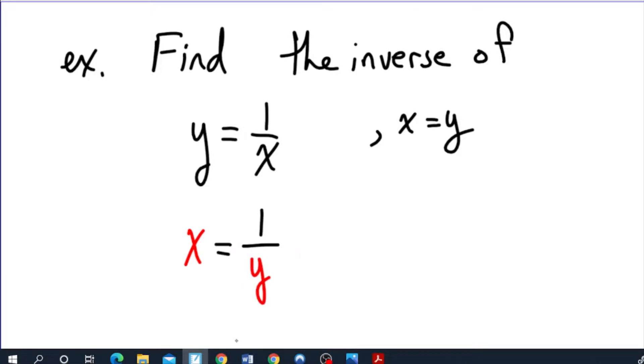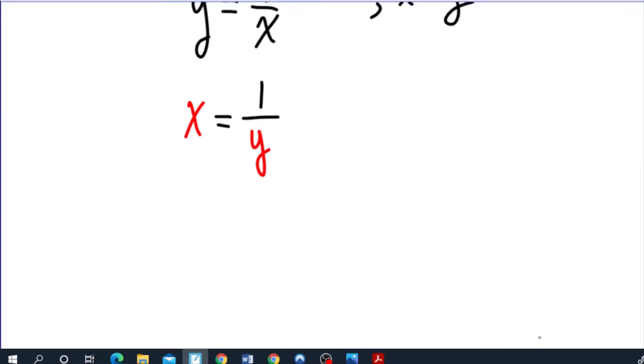And then we re-isolate for y. To re-isolate for y here, we're going to multiply both sides by y. And then we need to move the x out of there. So we're going to divide by x. And if you remember how this worked in trigonometry, you're basically just exchanging the x and the y positions by using some algebra here.